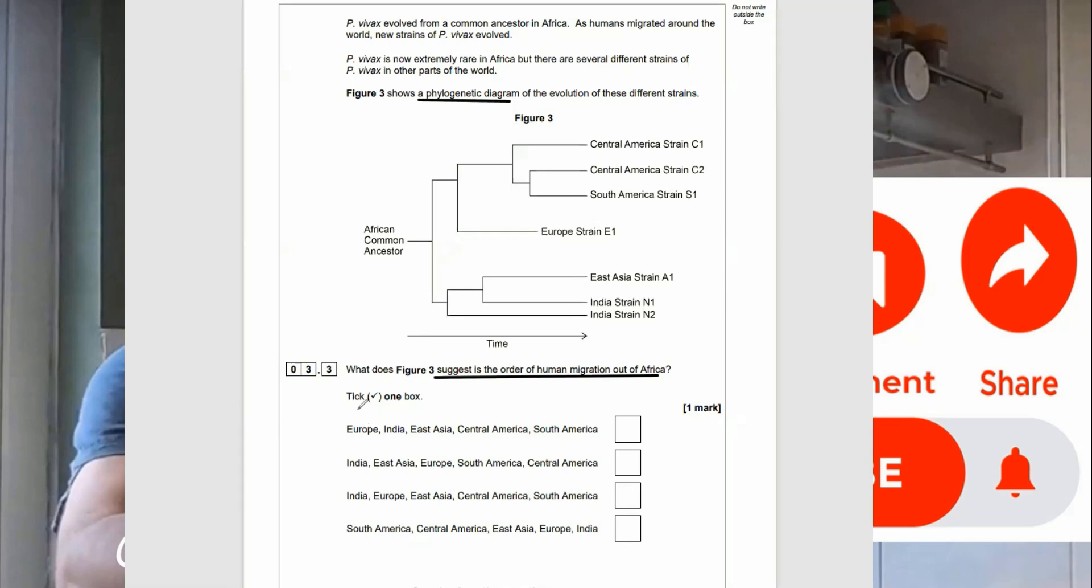And the question 3.3 says, what does figure 3 suggest about the order of human migration out of Africa? Well, if we look at the African common ancestor there, which is now extinct, go to the nearest point and write 1. That is the closest ancestor to the common African ancestor. Where's the next nearest point? It's over here. 2, and that's the European strain. Then 3, the Indian strain. Then 4, the Central American. And then 5, finally, is the South American strain.